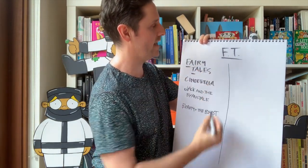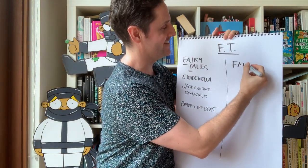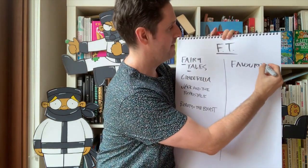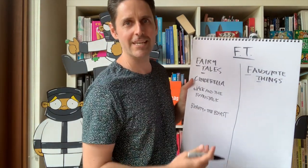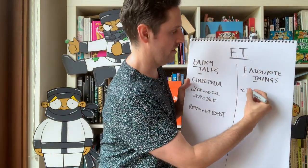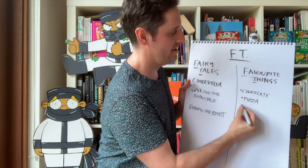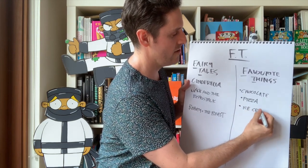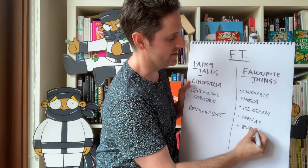On the other side of our FT list, FT stands for favorite things. Now everyone has favorite things — we all love different things, everybody's unique. My favorite things are pretty much all foods: I love chocolate, I love pizza, I love ice cream. I also like ninjas and robots, lots of different things like that. But on your list of favorite things, just put whatever you like.